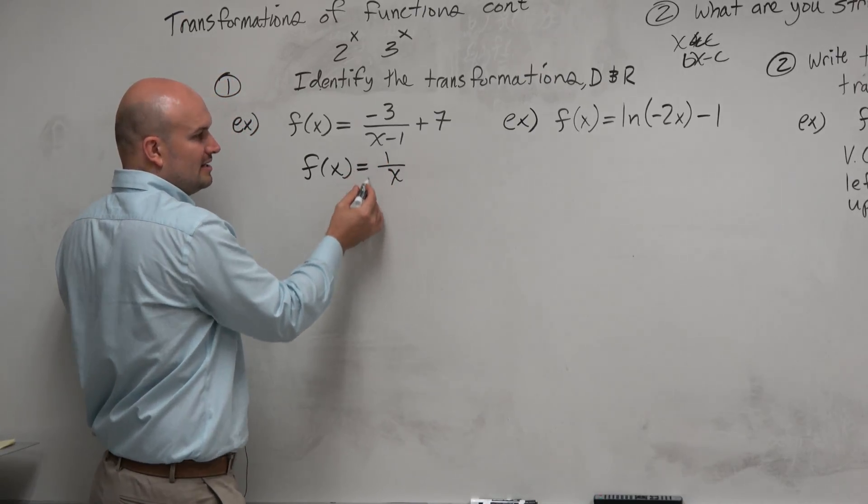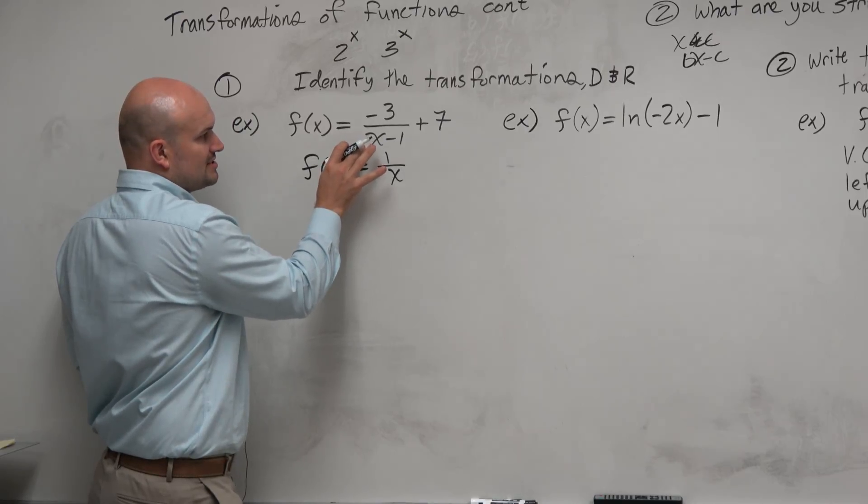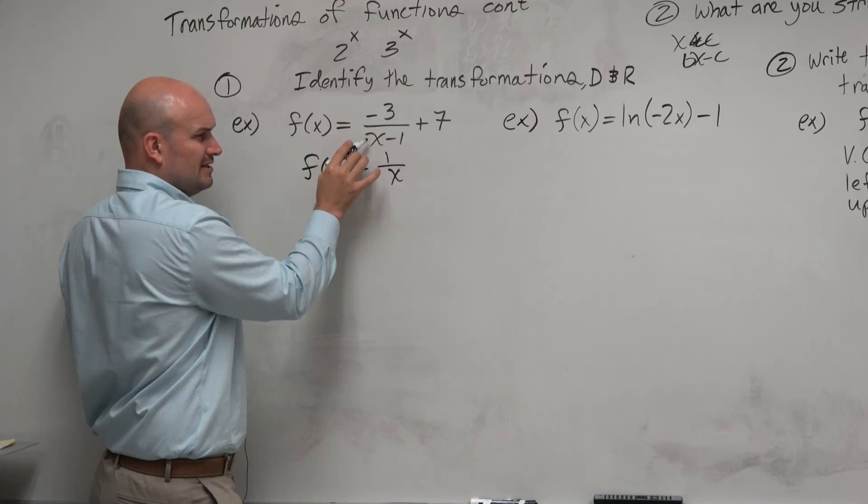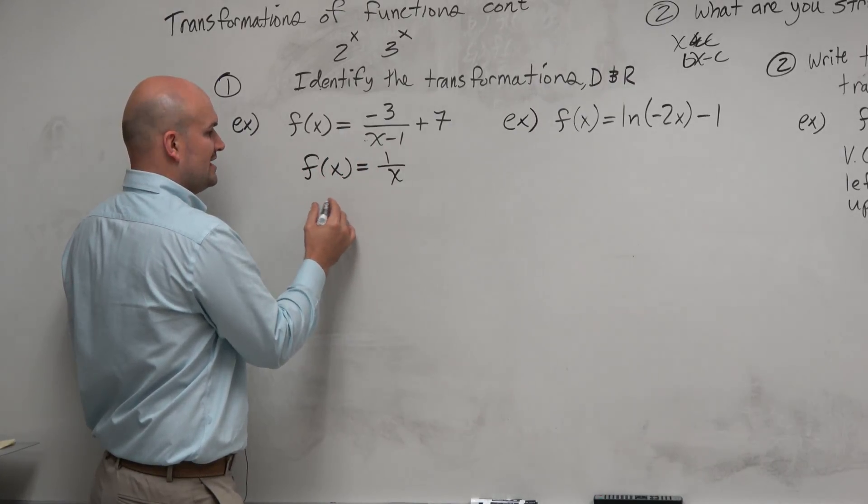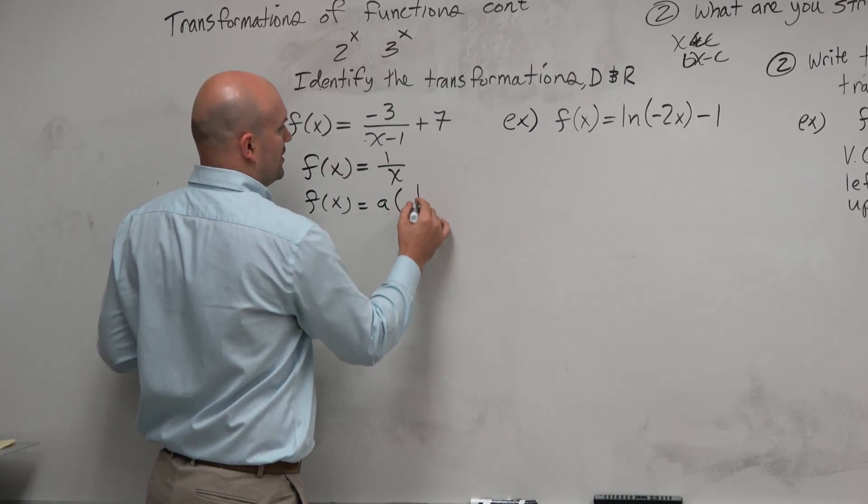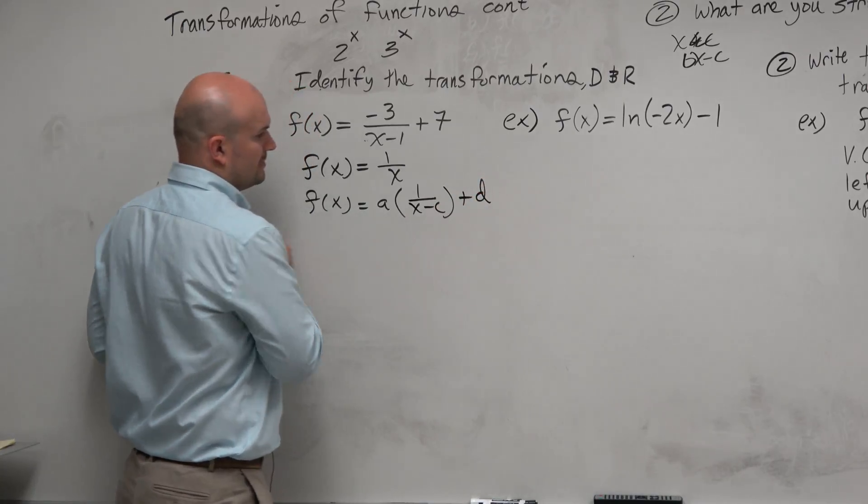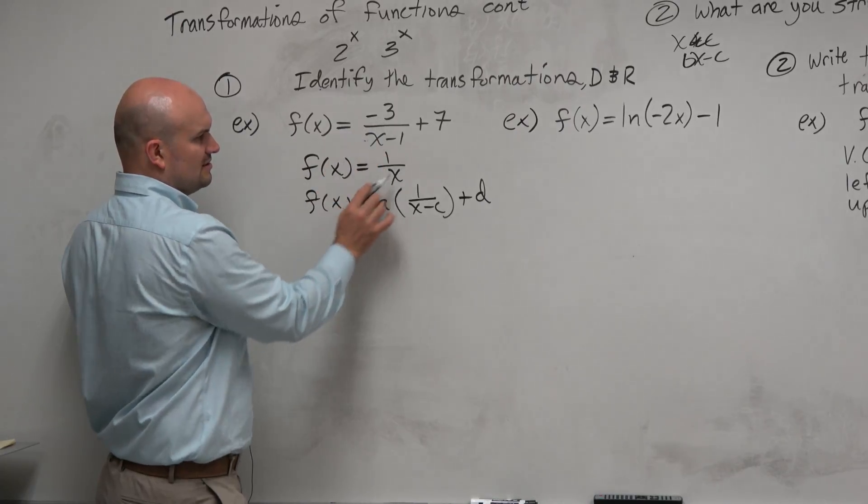But let's see how it looks then in this equation. Now, first of all, I notice that there is not a b here. So when there's not a b, I'm not going to include the b in the transformation notation. I'm just going to use a, c, and d. So in this case, I could say the transformations would look like this. It's a times 1 over x minus c plus d, right? And now some of you might say, well, this doesn't look the same.